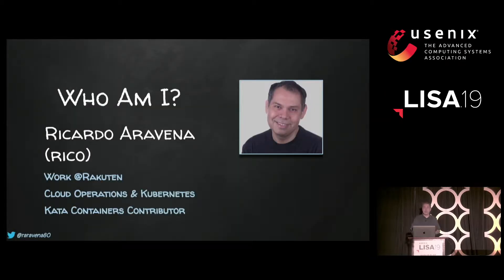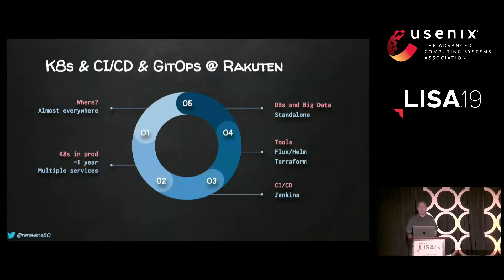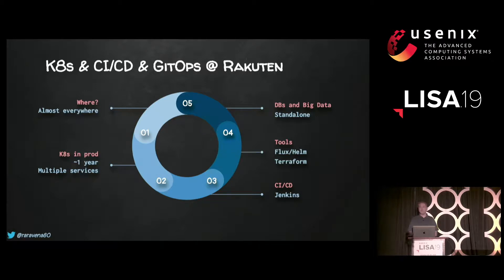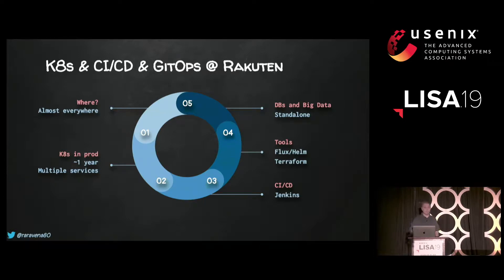A little bit about myself: I work at Rakuten, I'm manager of infrastructure there, and we run Kubernetes in production. I've been a Kata Containers contributor for the last two years. At Rakuten, we've been running Kubernetes in production for about a year. Our main CI/CD system is Jenkins — just basic Jenkins. We're also using some cloud-native foundation tools like Flux and Helm to deploy our infrastructure, and we're using Terraform. There are still some big data and database applications we haven't containerized yet, which is a common case in most companies doing CI/CD.